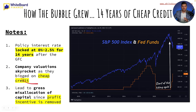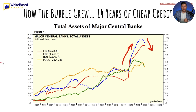Company valuations skyrocket as they binged on cheap debt over the past 14 years. This is why real estate is out of control. This is why tech companies have absolutely exploded. It's basically led to the gross misallocation of capital since the profit incentive is removed. If we take a look at this chart, this is the total assets of major central banks all around the world. In red is the Fed — the United States Federal Reserve. In blue is the European Central Bank. In green is the Bank of Japan. In orange is the People's Bank of China.